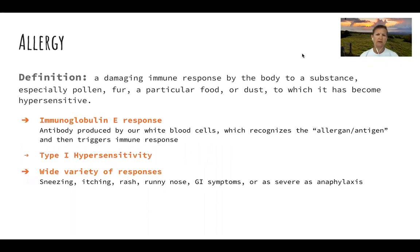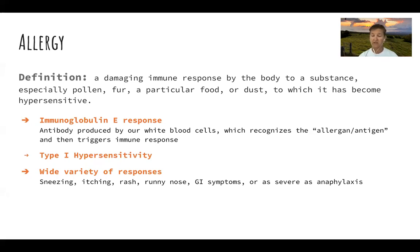When we talk about allergy, the definition would be a damaging immune response by the body to a substance. We often think of allergens as pollen, dander or fur, particular foods, dust, mold, those sorts of things. There are a few different types of responses. We have an immunoglobulin E response — antibodies triggered by our white blood cells. What these immunoglobulins do is react to an allergen or antigen, like an infection, and trigger an immune response. These are type one hypersensitivity responses, with body responses like sneezing, itching, rash, runny noses, GI symptoms.